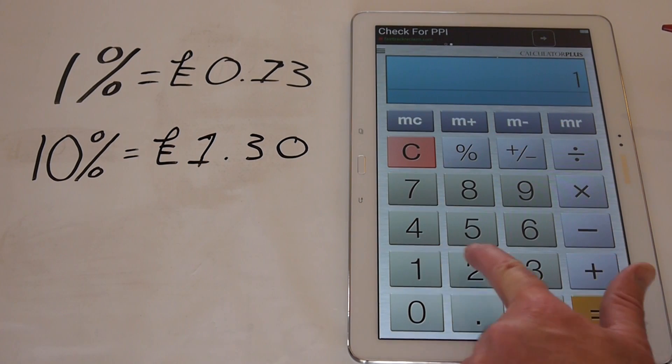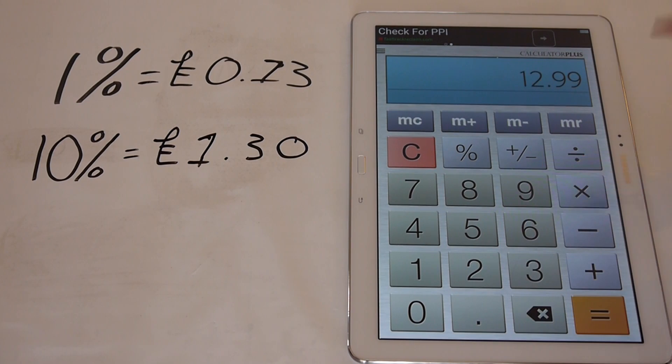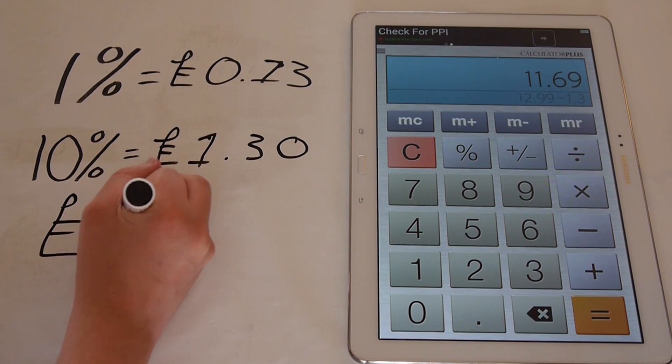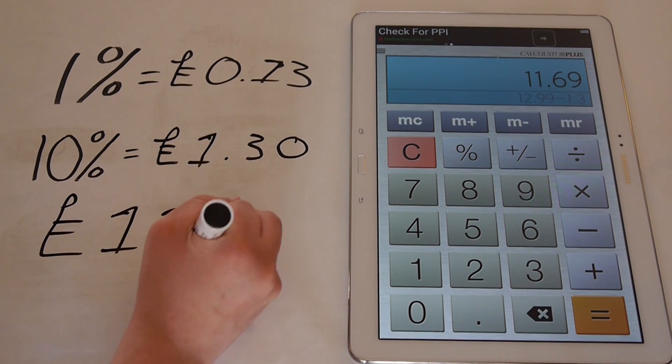So the answer to the question of £12.99 minus the 10%, which we know is £1.30, is equal to £11.69.